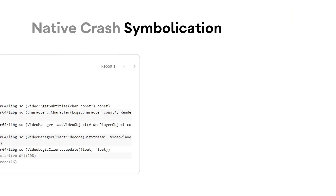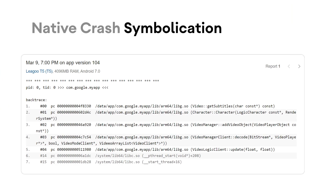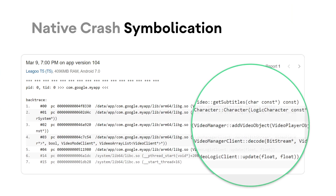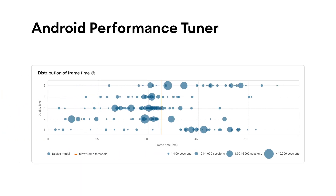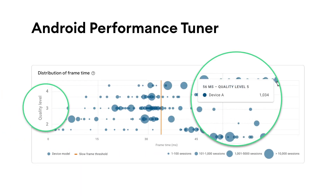We're previewing native crash symbolication within Android Vitals as an open beta. If you give us your native debug symbols, we will add vital debugging information, such as class and function names, to your crash report. We are also previewing a new suite of metrics and insights in Android Vitals powered by the Android Performance Tuner.